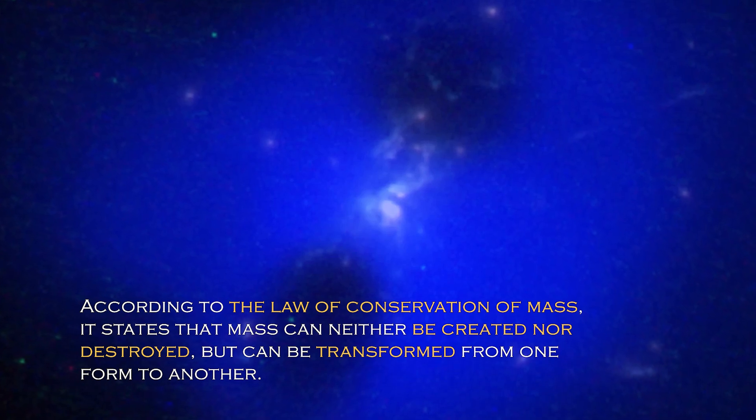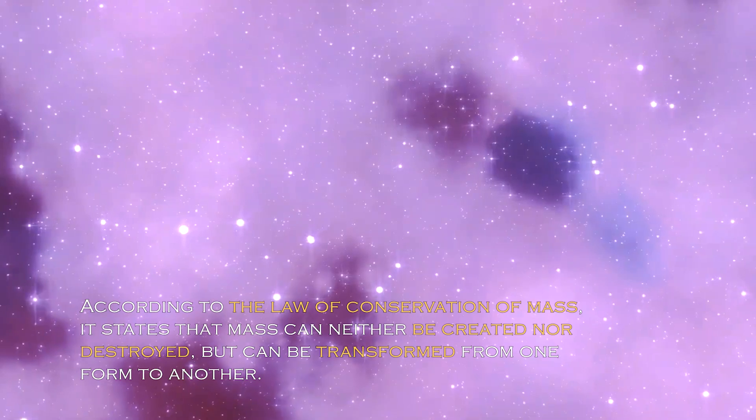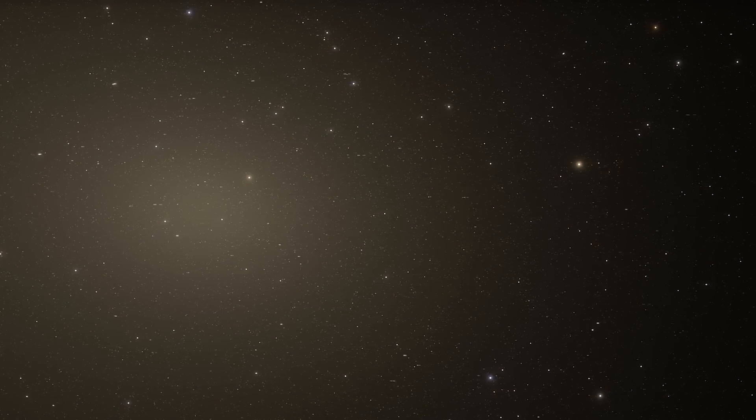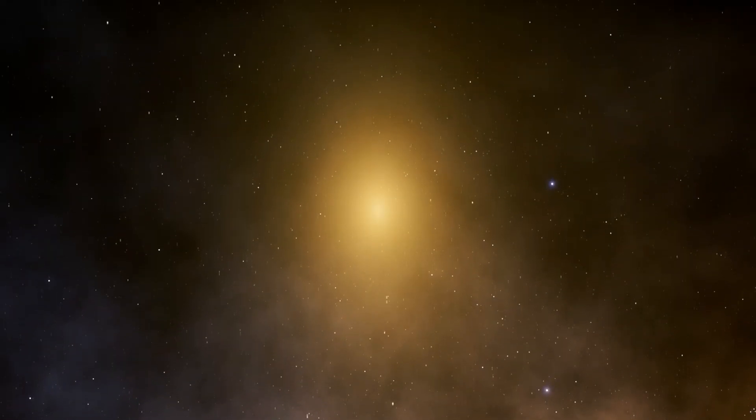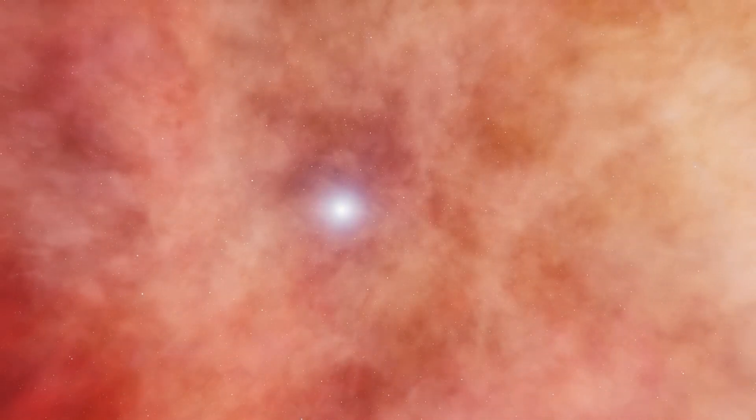According to the law of conservation of mass, it states that mass can neither be created nor destroyed, but can be transformed from one form to another. Since research on the universe has been based on principles such as this one, it is challenging for scientists to explain the disappearance of an entire world composed of stars and planets from the universe. Were they destroyed or did they simply change?